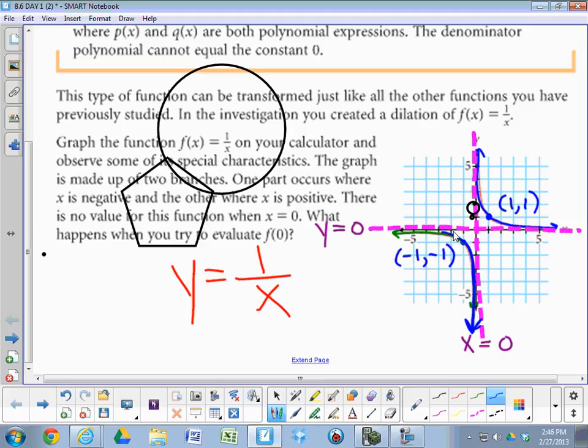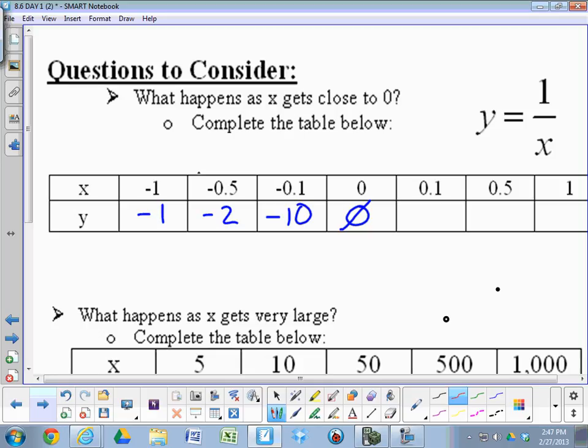What happens on the other side of the error? On the other side of the error approaching left, what happens to y? It's bigger and bigger and bigger. So that should be here on your table. You should have 1, 2, 10. Again, if you put in 0.001, that's like putting in 1, 1,000.